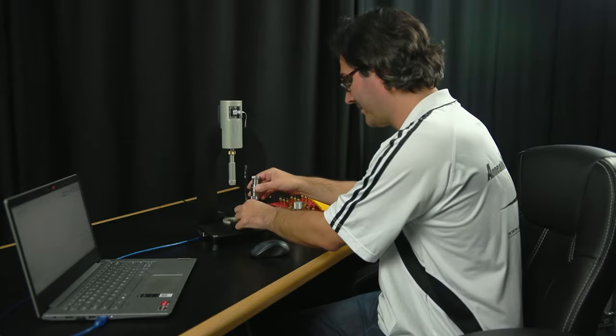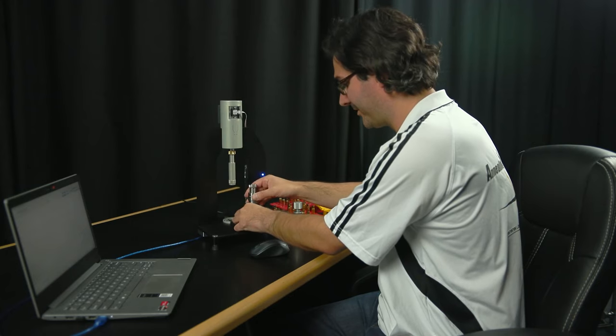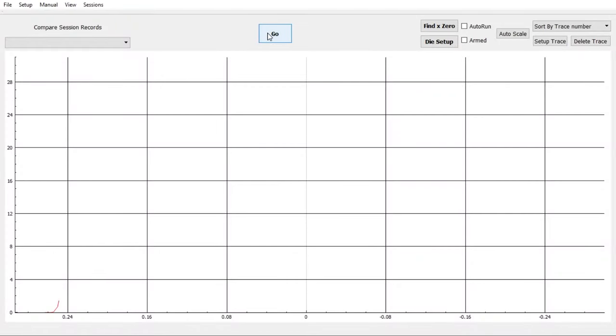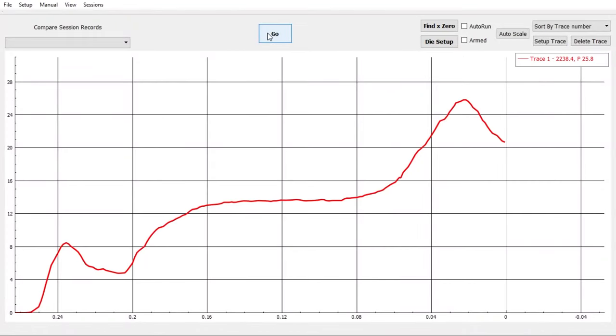I've got my bullet ready to seat. I will now press go. Now we've got our first plot. You can see it's called trace number one, and it's got a few numbers there which we'll get to shortly.